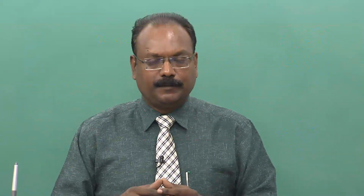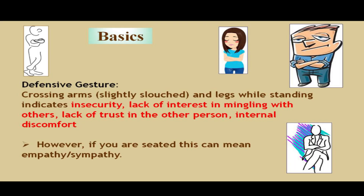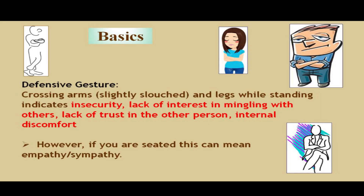Look at some basics particularly in terms of defensive gesture. Crossing arms, but slightly slouched — the body is low, the legs are not straight and sometimes pulled together. This slightly slouched posture indicates insecurity, lack of interest in mingling with others, lack of trust in the other person, and a kind of internal discomfort.